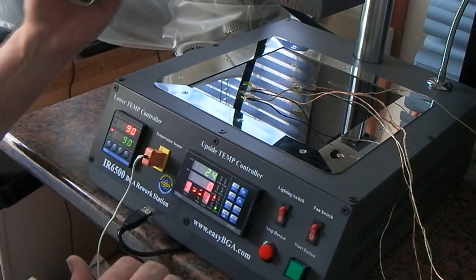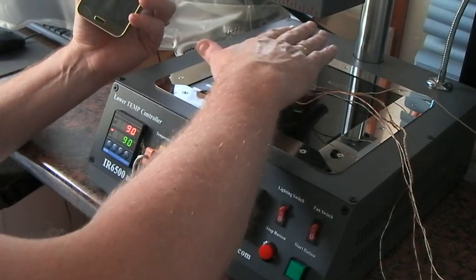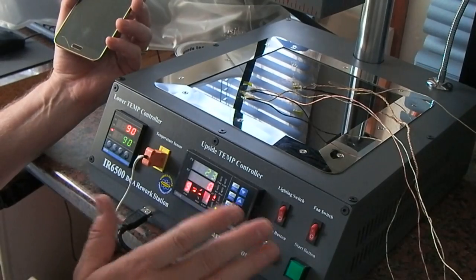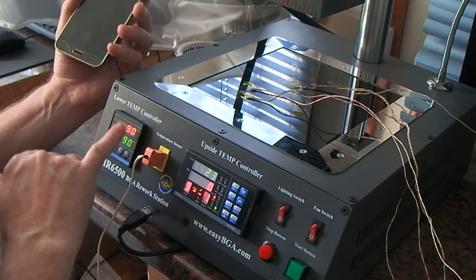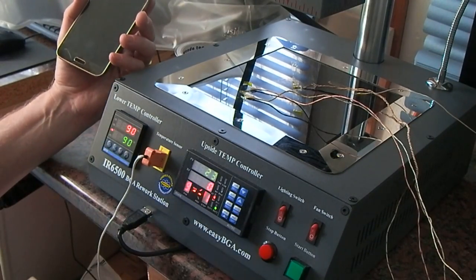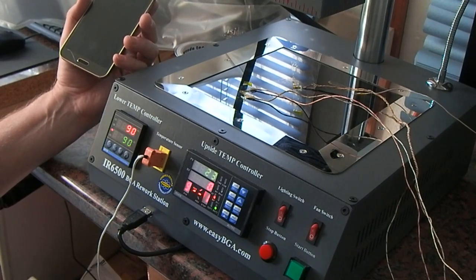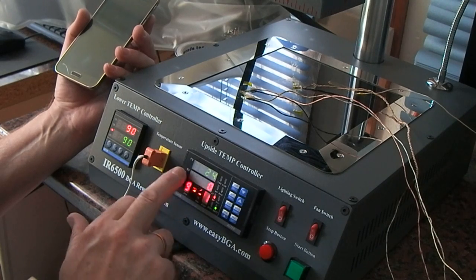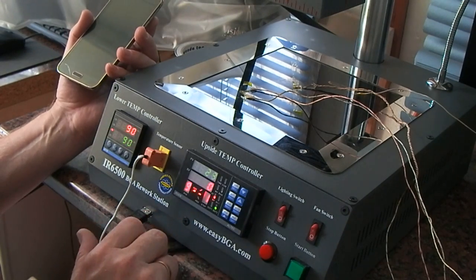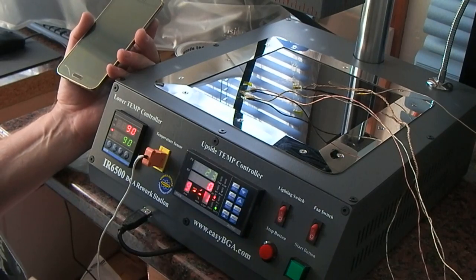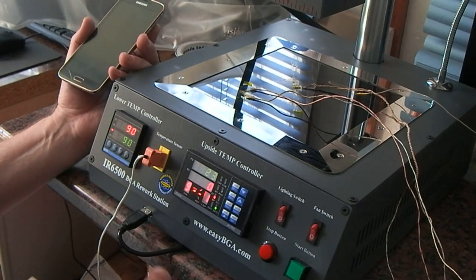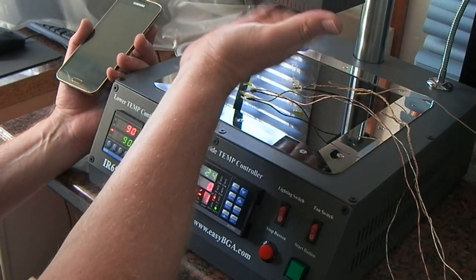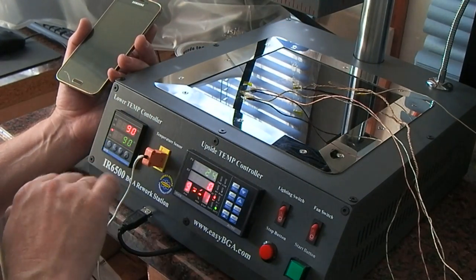The preheater doesn't really want to work unless you're running a profile. Now there may be a way around that, but all I've done is selected pattern nine, set the set value to zero, and set the first process step to something like 80 minutes, then just hit the start button.